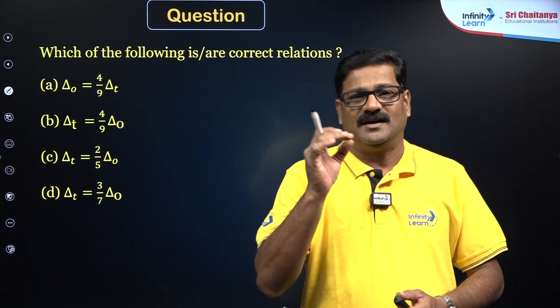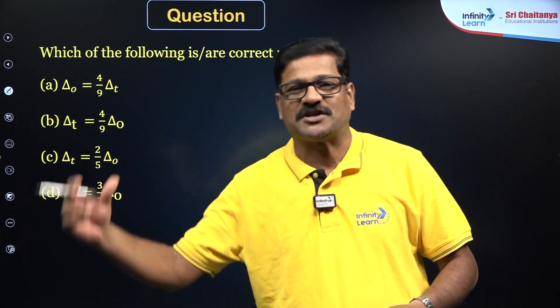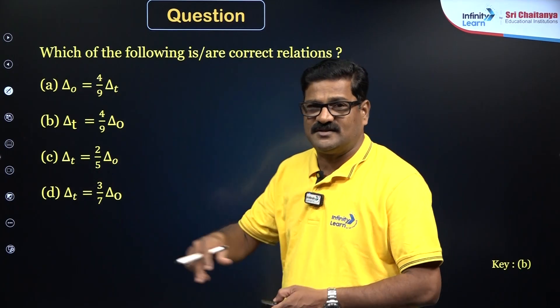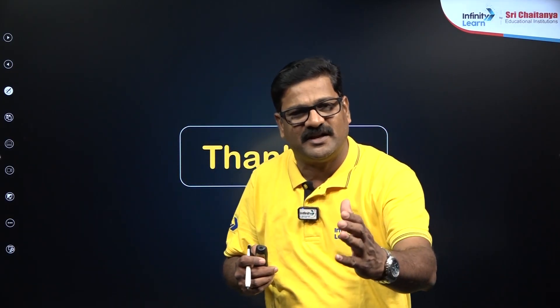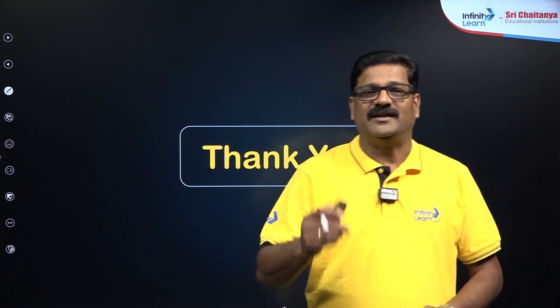A simple NEET question: ΔO means octahedral crystal field splitting energy and ΔT means tetrahedral crystal field splitting energy. The relation between these two is that ΔT = (4/9)ΔO. In today's class, we covered crystal field theory as an extension of valence bond theory, how crystal field splitting happens in octahedral and tetrahedral geometries, the spectrochemical series, and the applications of CFT — magnetic nature and colour. We will see NCERT-based NEET examination questions in the next session.